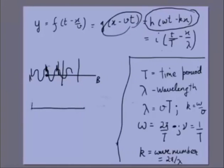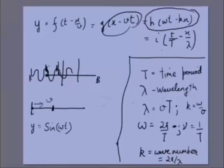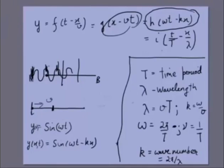A standard example: a rope with one end moved in simple harmonic motion as y = sin(ωt). If the wave speed is v, every other point also undergoes SHM, but delayed in time. The state of any point x at time t is the state of the origin at time (t − x/v), so the full wave equation is y(x, t) = sin(ωt − kx). You can also write it in the other equivalent forms.